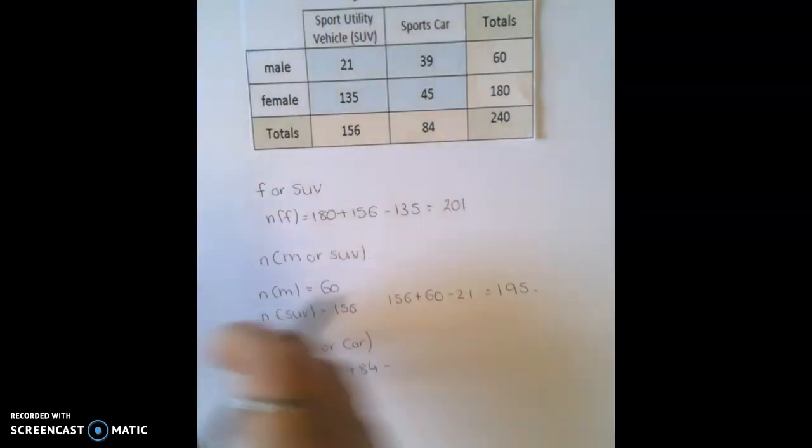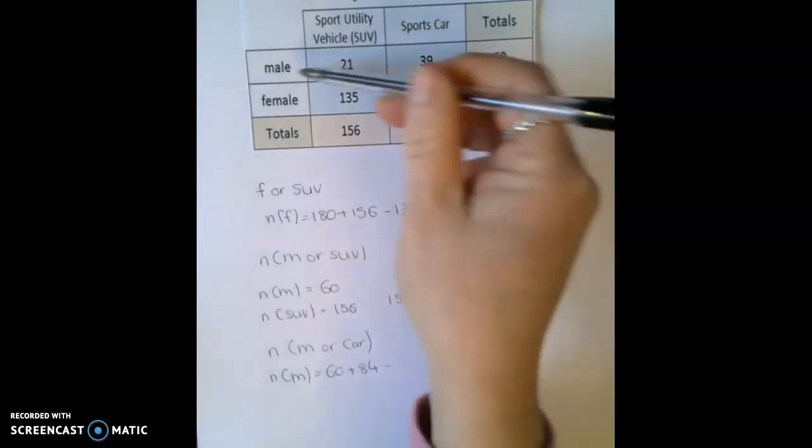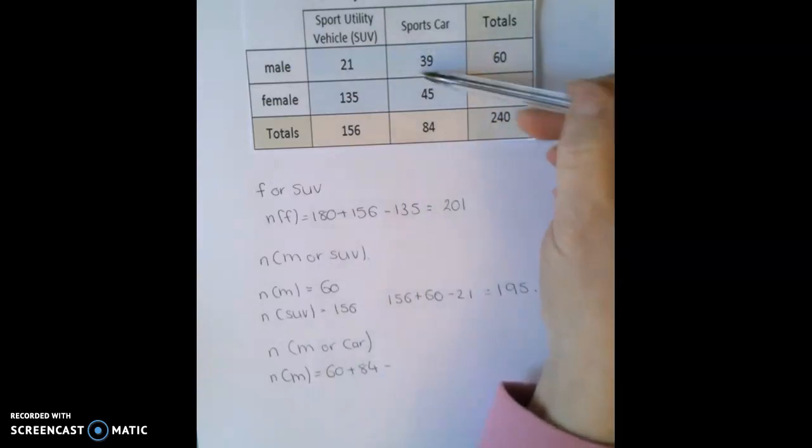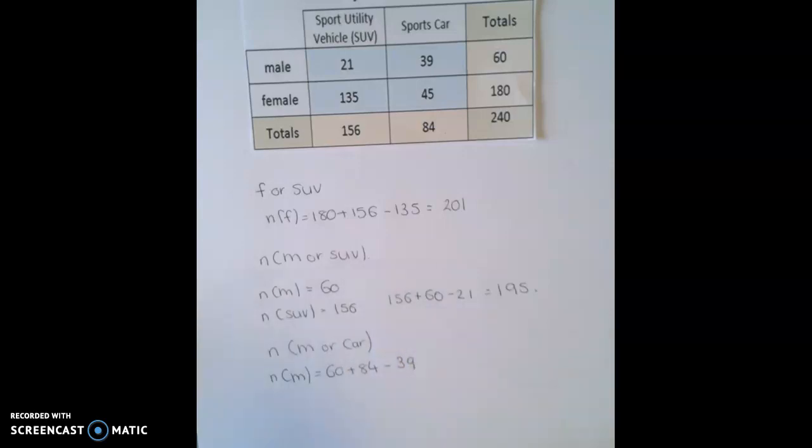But our intersection, so where did the column and the row cross each other? So that was here. They crossed here. It's 39. So that becomes 60 add 84 minus 39. And that gives us a total of 105.